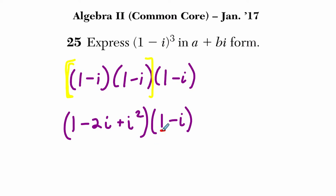Now what I want to do is take this first term and multiply it by each part of the trinomial. 1 times this trinomial is just itself, so I'm going to rewrite it, 1 minus 2i plus i squared.